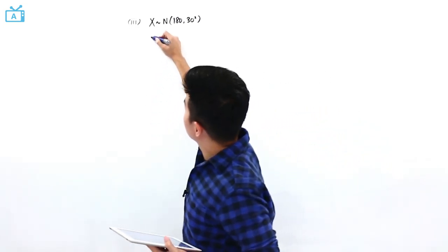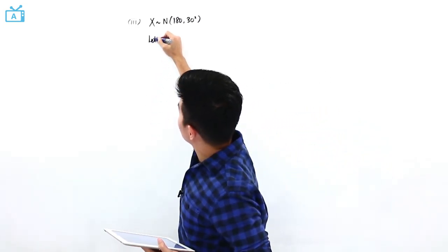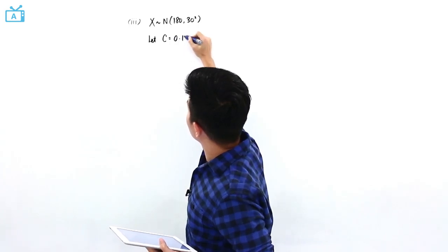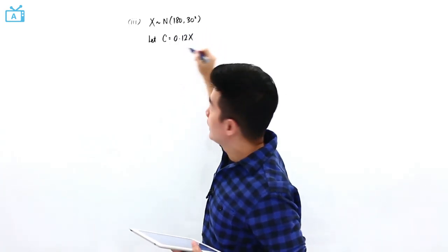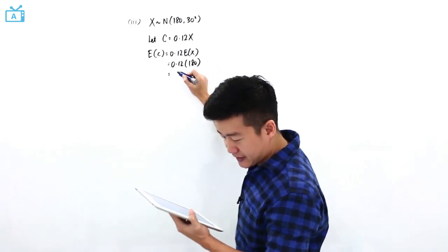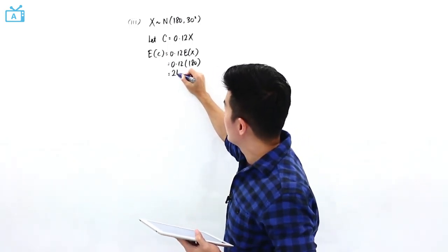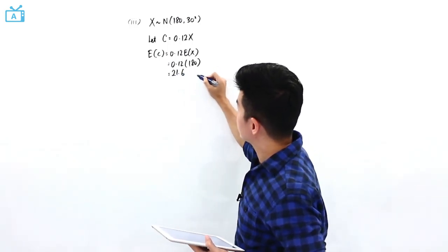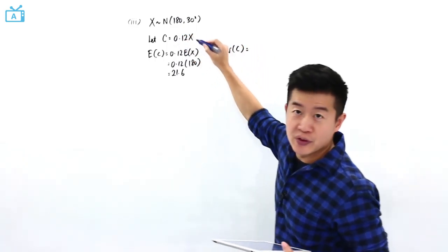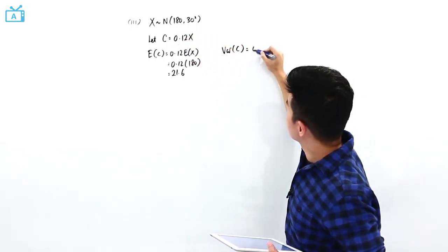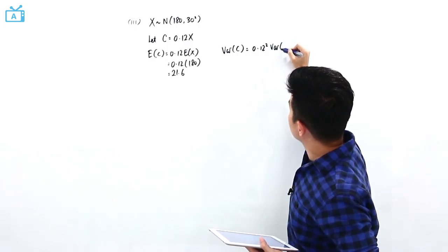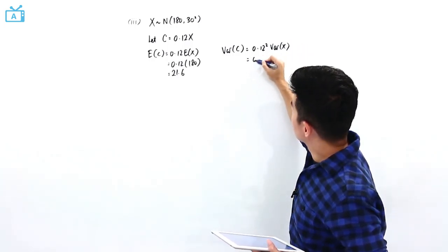Let C be the total cost at the peak rate. That means C is equal to 0.12X. The expectation of C is going to be the expectation of 0.12X, which is 0.12 times the expectation of X. The expectation of X is 180, so this is equal to 0.12 times 180, which equals 21.6.